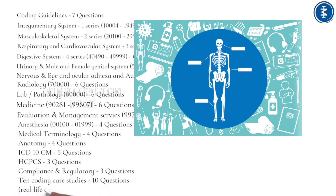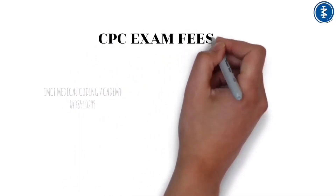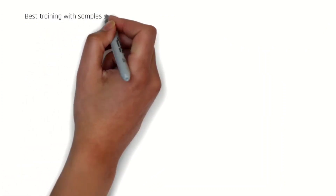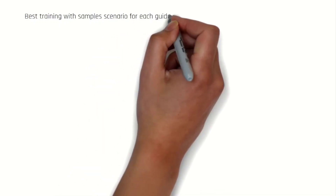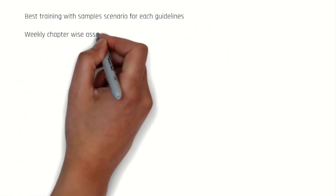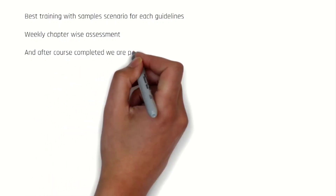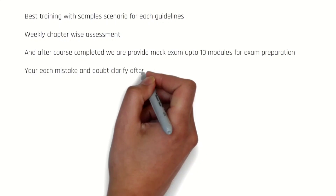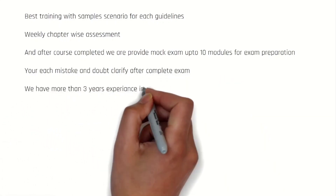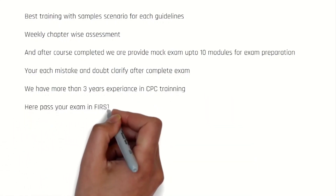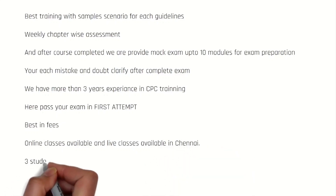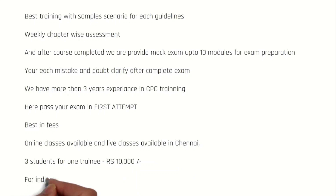This section covers real-life coding scenarios. Before knowing about CPC examination fees, you should know about training details. The course duration is one to two months. IMCI Medical Coding Academy provides best training and sample scenarios for each guideline. Classes are available in Chennai and live online. Group training (3 students) costs RS 10,000; individual training costs RS 15,000, with flexible timing.